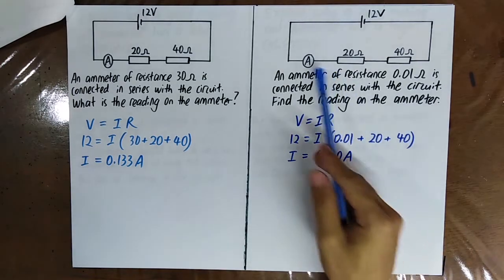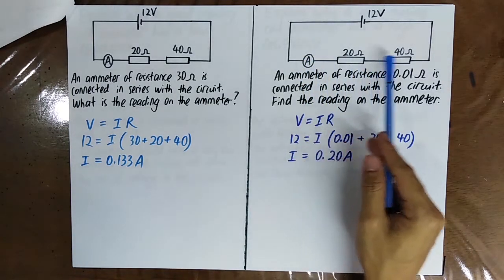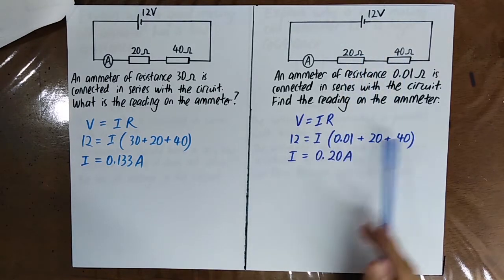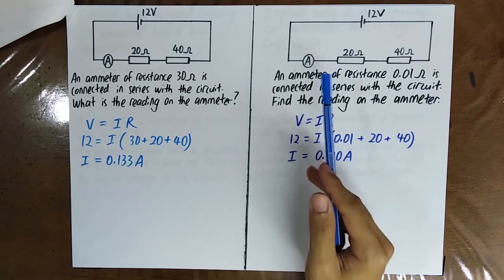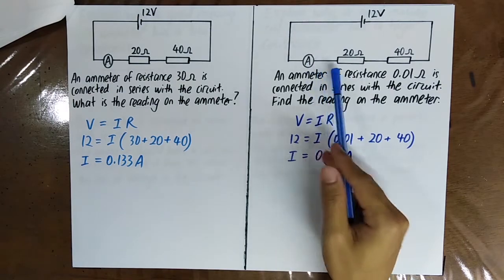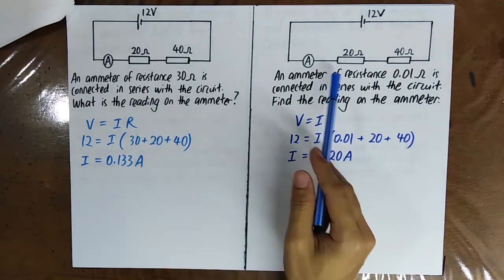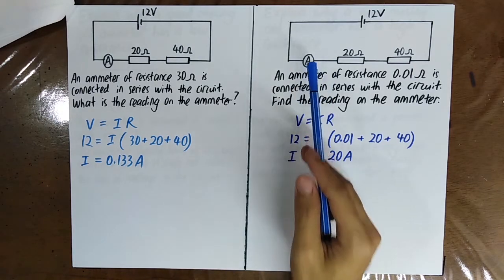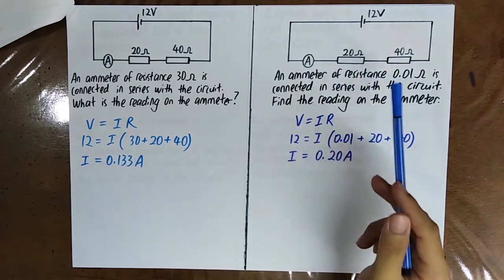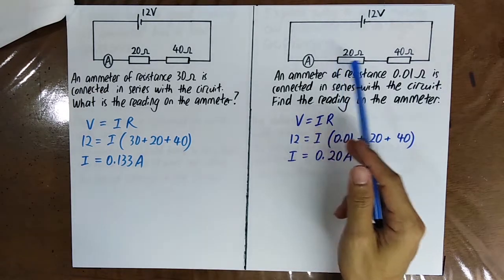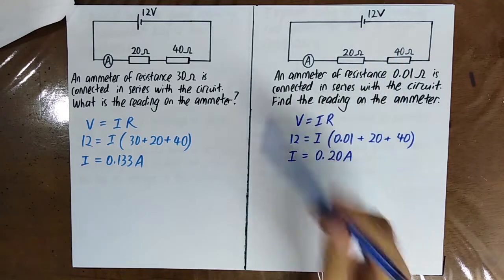You know that the resistance of the ammeter is so small compared to the other resistance. Therefore, this current is a better measurement of the current of the circuit. So you know that an ammeter should not have too high a resistance so that it does not cause potential drops inside the circuit.